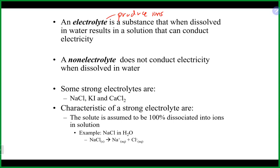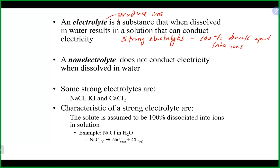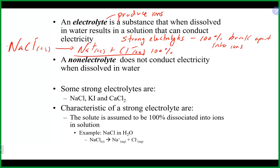Because electrolytes produce ions in solution, they're able to conduct electricity. There are different types. Strong electrolytes 100% break apart in solution. So if you take sodium chloride in solution, it really is sodium ions and chloride ions floating around — you have basically 100% of those ions in solution, with none of the sodium chloride units still together.